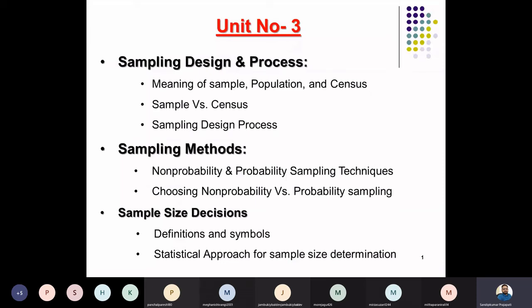The content of unit number three is 'Friends'. In unit three we have three main points, namely: sampling design and process, sampling methods, and sample size decisions. In sampling design and process, we are going to start with understanding the meaning of sample, population, and census.